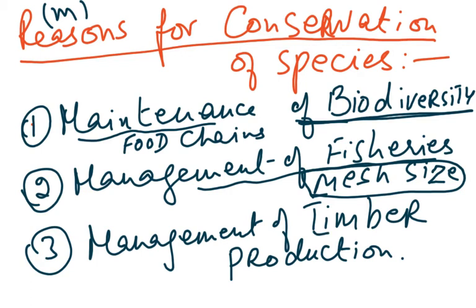The third context is management of timber production. Trees are being cut down at a much higher rate than they are being planted, resulting in deforestation. For every tree cut down, we need to plant at least two — because maybe one will survive and one will not. We need timber for fuel and construction, but we must also replant trees, as they take quite a while to grow.